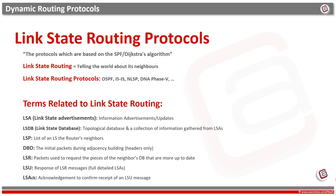Each node then independently calculates the next best logical path from itself to every possible destination in the whole network. The collection of best paths will then form the router's routing table.